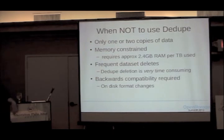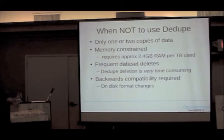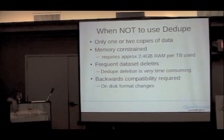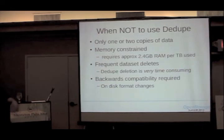The other place not to use dedupe is where there are on-disk format changes. If you need backwards compatibility to the 2.x tree — say you want a test deployment of 3.x with the backup plan of going back to 2.x — do not turn on dedupe. If you turn it on, you can't go back. It's a one-way street.